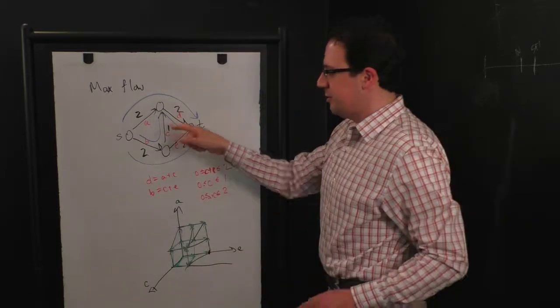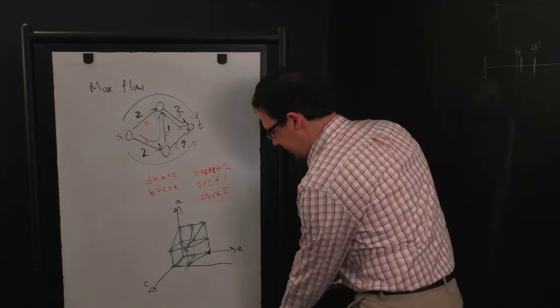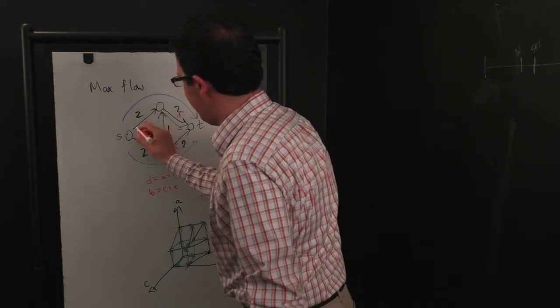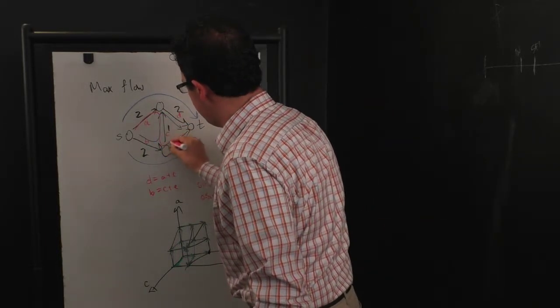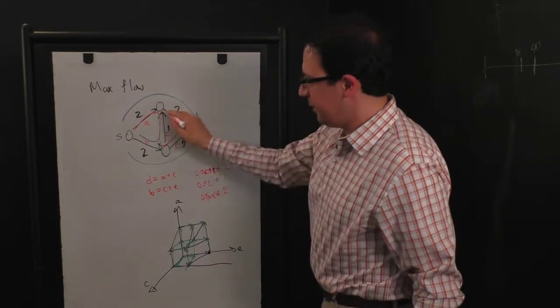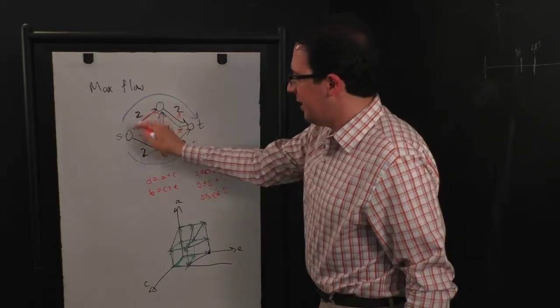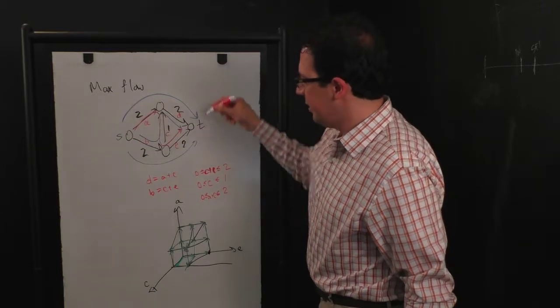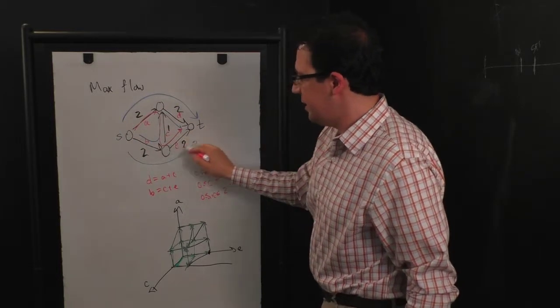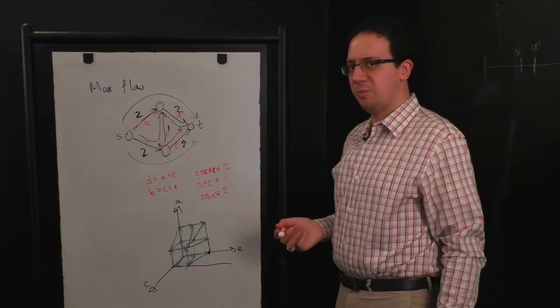And you can see if I do that here, let me put the canceling flow in red, I can then push flow like this. The flow this way and the flow this way cancel out. A now has two units of flow going. D now has two units of flow. B has two units of flow. And E has two units of flow, which is the optimum solution.